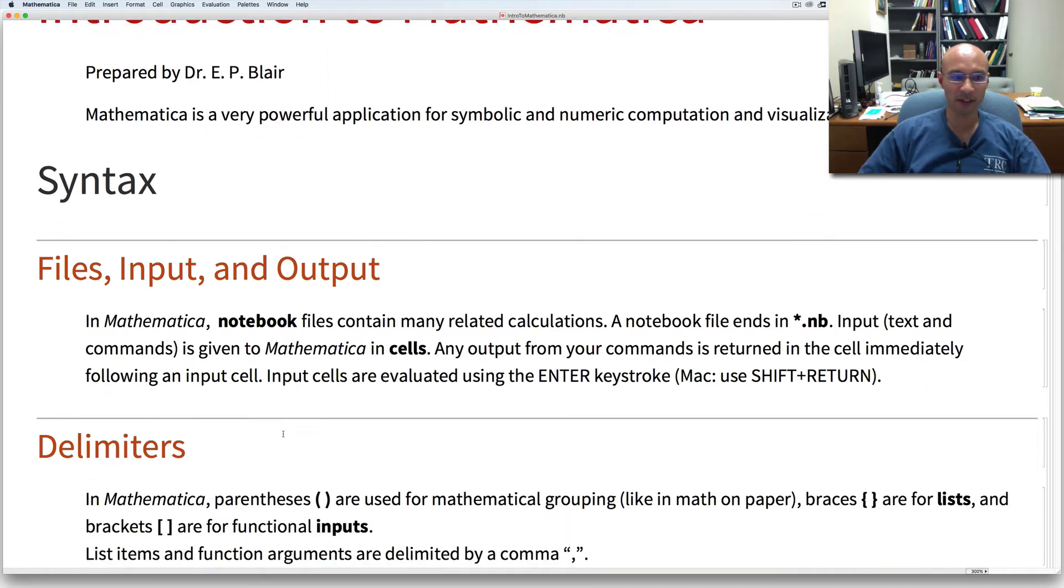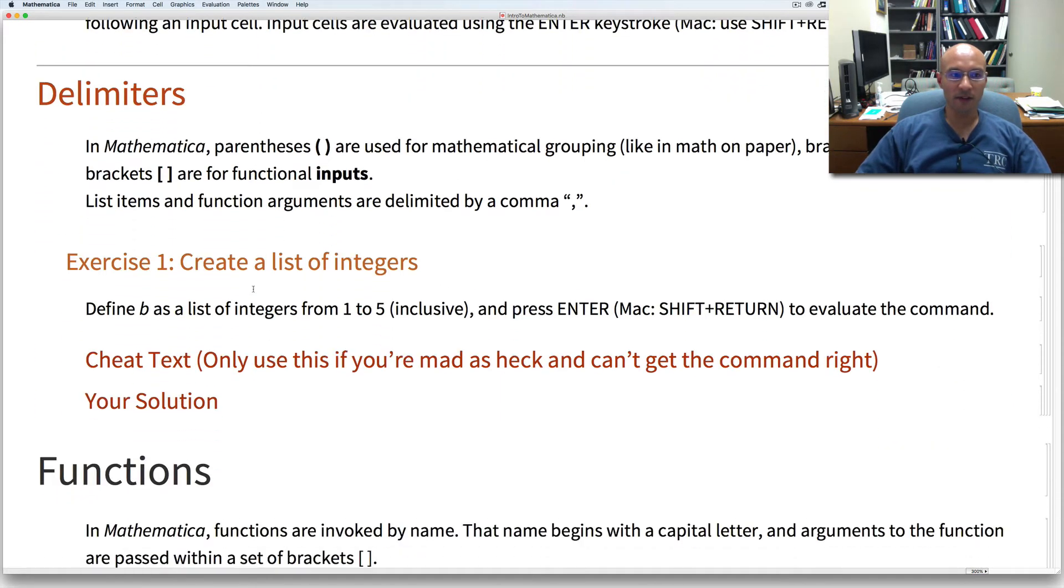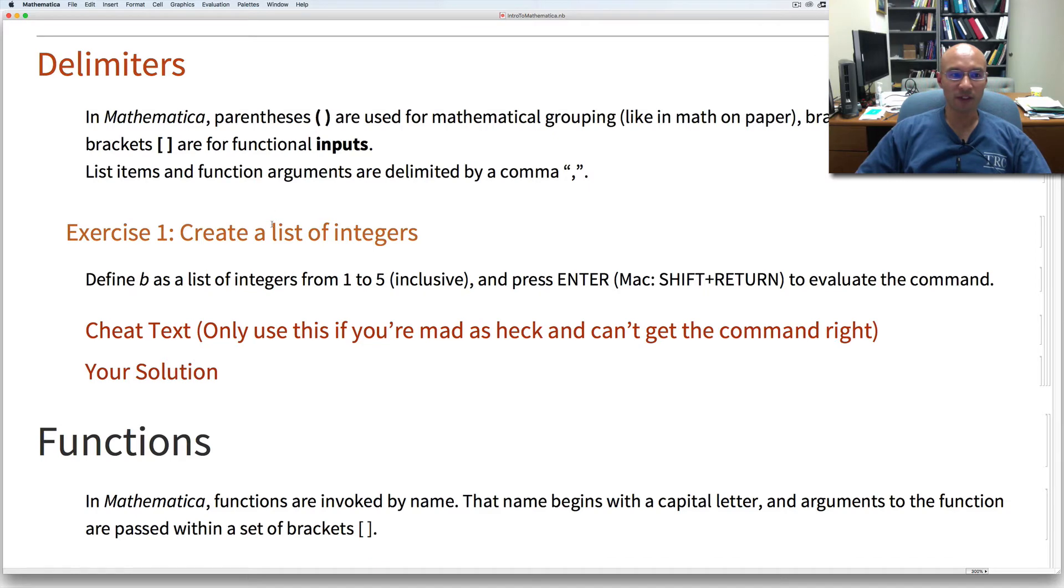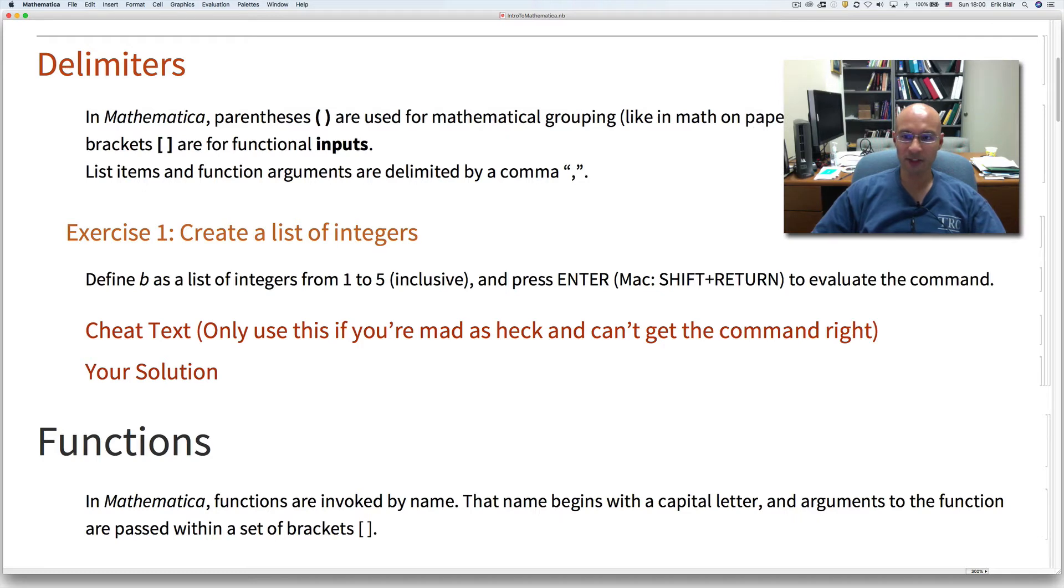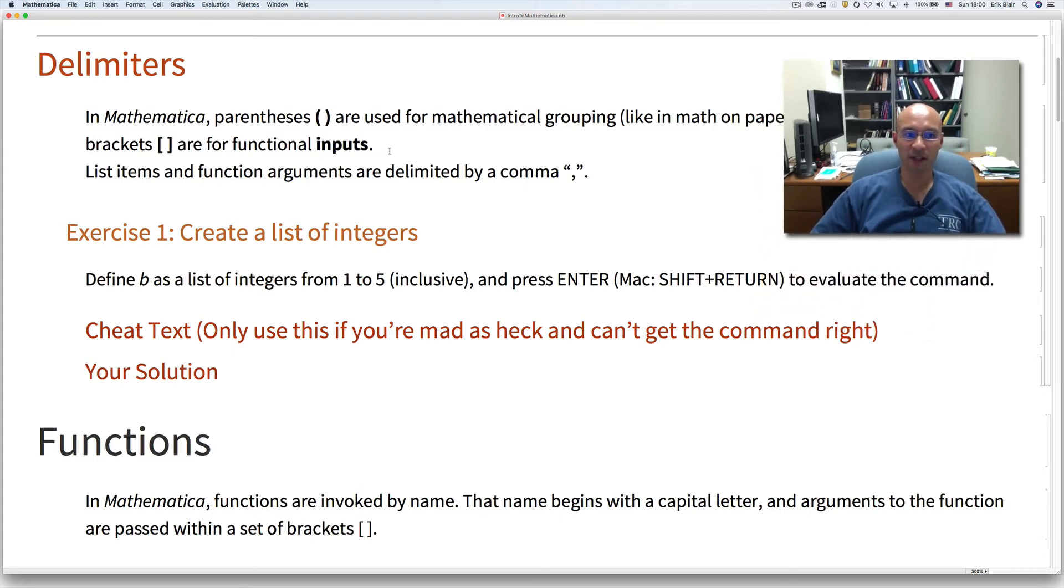So we just talked about cells and notebooks and files. One thing important to note in Mathematica is the use of delimiters. Parentheses are important for mathematical operations and groupings, just like when we write things on paper. Braces form lists and brackets are for functional inputs. Now this differs from most other programming languages because when you write a function and you provide inputs, you usually use parentheses. But in Mathematica, brackets specify function inputs.